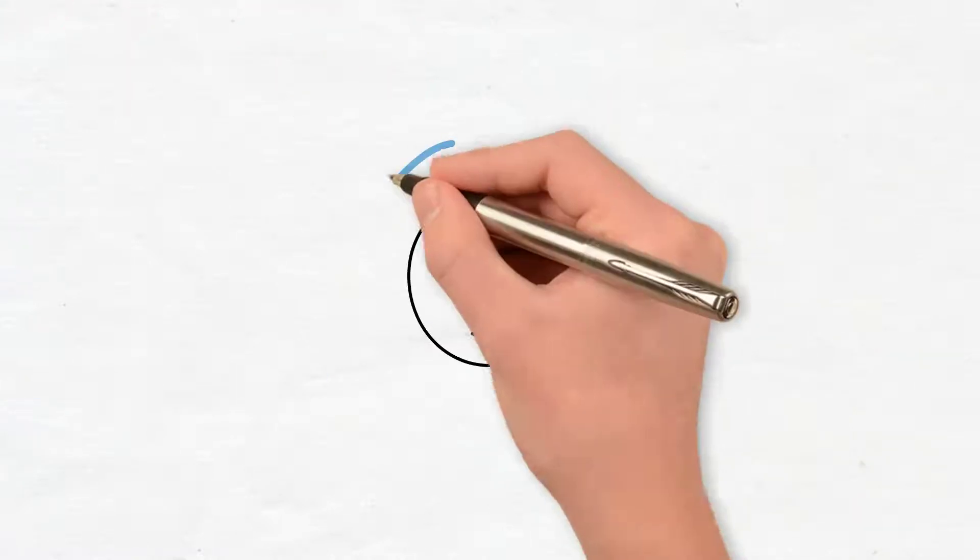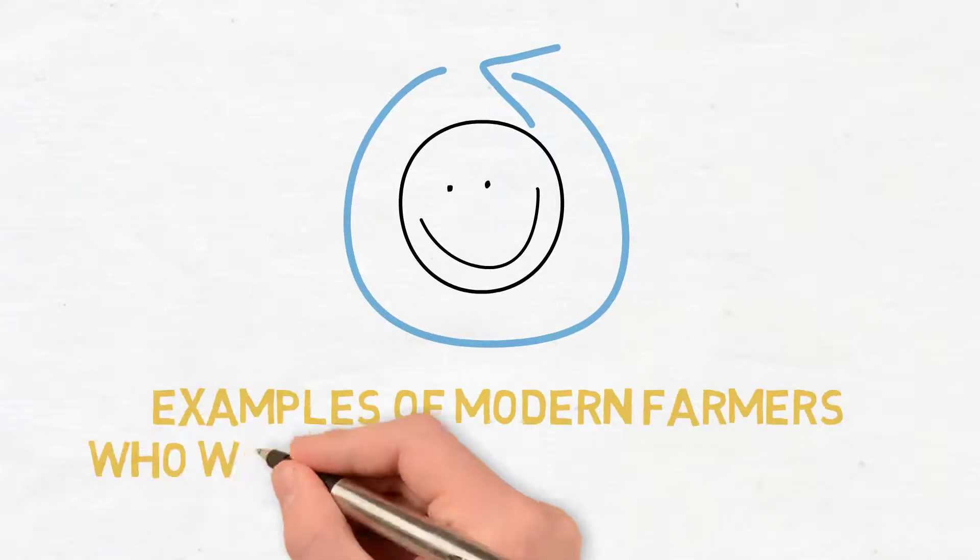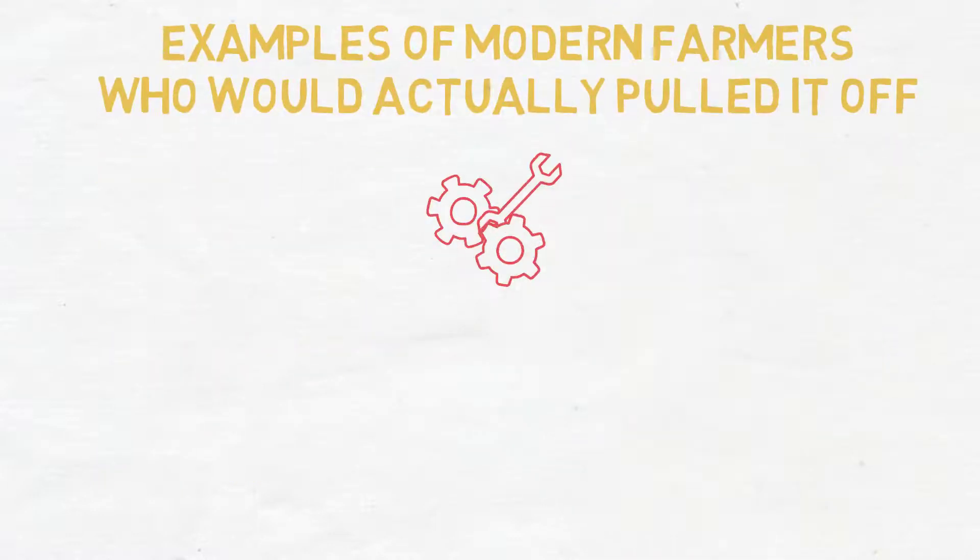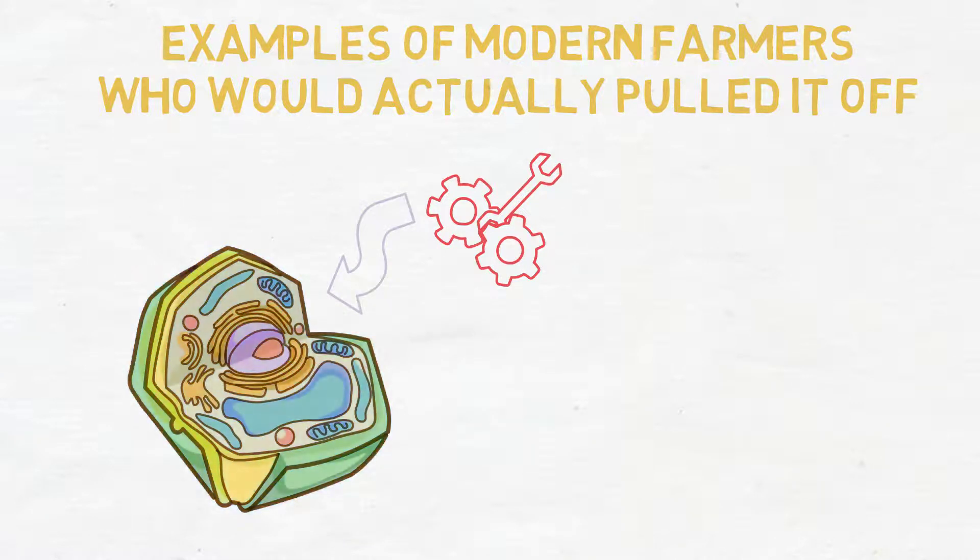But what really sort of turned me around in going from being a pessimist on the issue to being an optimist on the issue was seeing examples of modern farmers who had actually pulled it off, who had actually adapted their practices in ways that rebuilt the organic matter, rebuilt the fertility of their land.